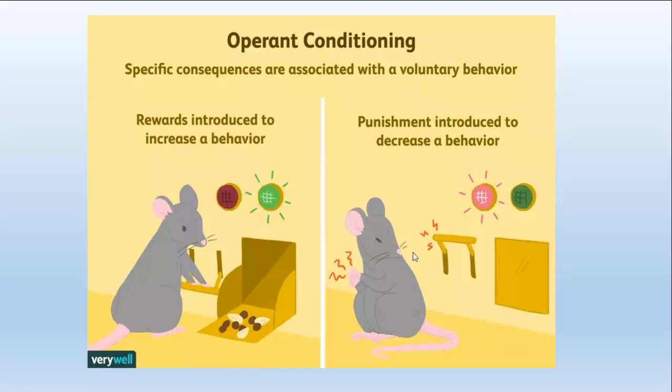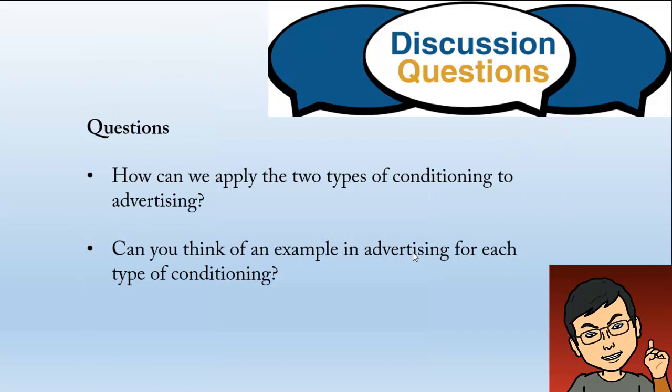Since this is an advertising class, here is a question: can you tell me how we can apply these two different types of conditioning to advertising? Can you think of examples in advertising that apply either classical conditioning or operant conditioning to their message?